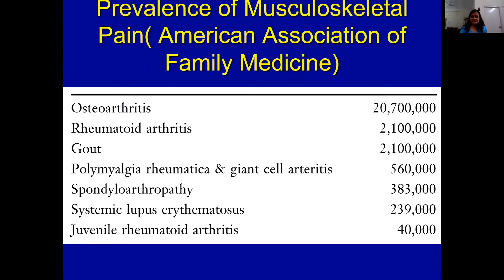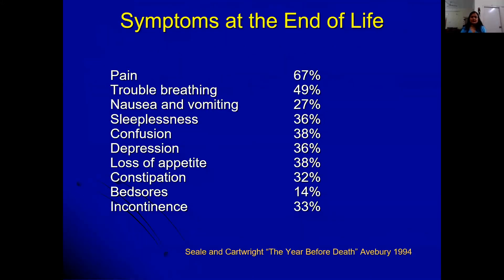Many working in general practice encounter a lot of musculoskeletal pain. Based on the American Association of Family Medicine, the most prevalent musculoskeletal pain conditions seen in practice include osteoarthritis at the top, followed by rheumatoid arthritis, gout, polymyalgia, SLE, and juvenile rheumatoid arthritis. These are among the most common reasons a patient comes to a primary health center or district-level facility.